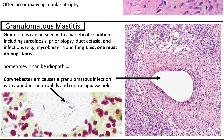When you see granulomatous mastitis and you're not sure what the cause is, you must do bug stains to rule out an infectious etiology. Sometimes it can be idiopathic. Tying it into microbiology, Corynebacterium can cause a granulomatous infection with abundant neutrophils and a central lipid vacuole. What we see here are Corynebacteria in the lumen with mixed inflammation, and this entity is called cystic neutrophilic granulomatous mastitis.